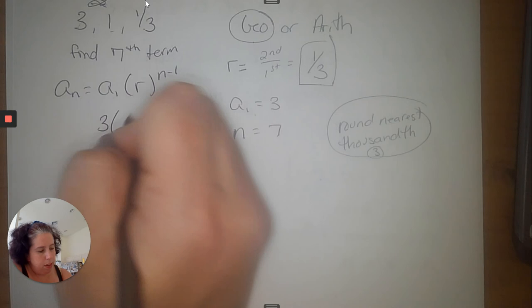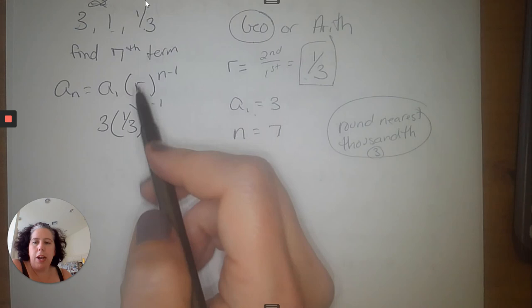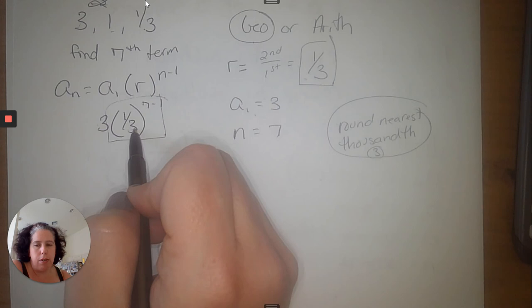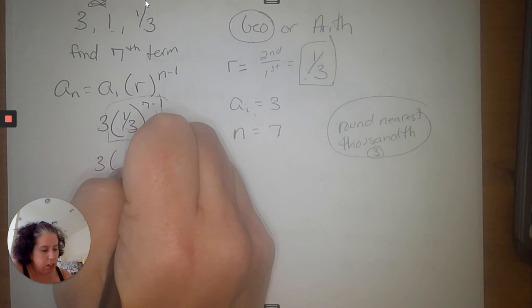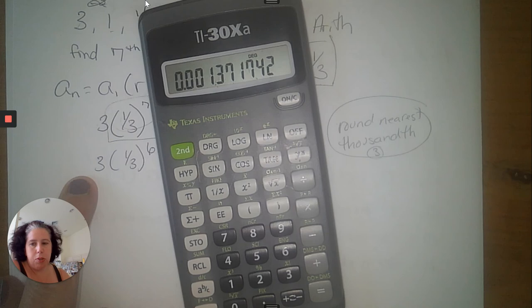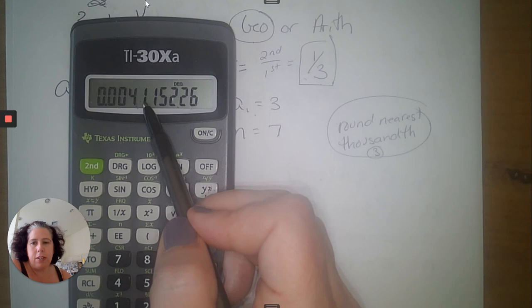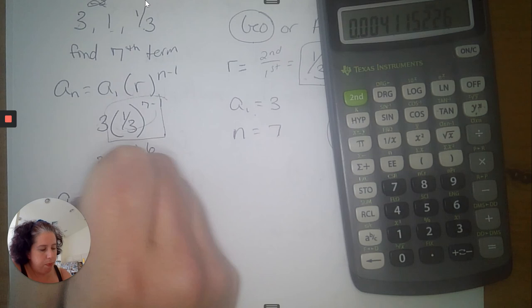Since it's geometric, use a_n equals a1 times r to the (n minus 1). So we have 3 times (1/3) to the (7 minus 1) power, which is 3 times (1/3) to the 6th. Remember: do the exponent first — don't multiply 3 times 1/3 before handling the exponent. Calculate (1/3) to the 6th on your calculator, then multiply by 3. Rounding to the nearest thousandth, look at the 4th decimal: it's a 1, so it stays. The answer for the 7th term is 0.004.